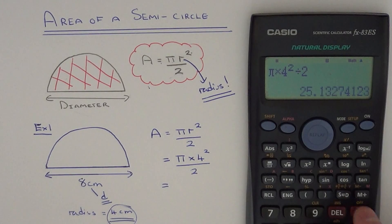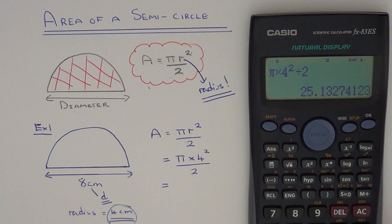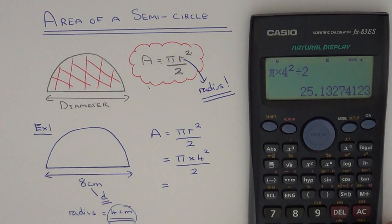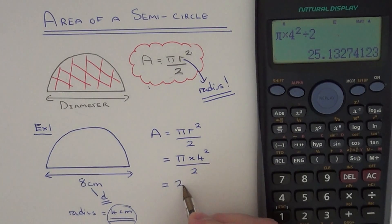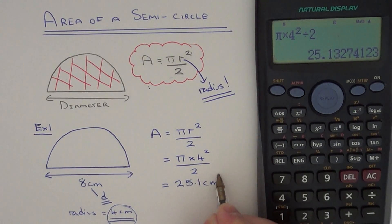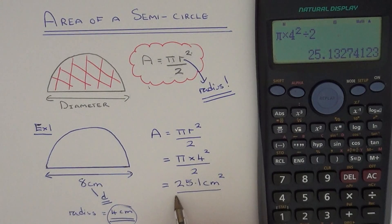Now let's write the answer as a decimal. We get 25.13274123, which rounded to three significant figures is 25.1. The unit is centimetres squared, so that's our final answer.